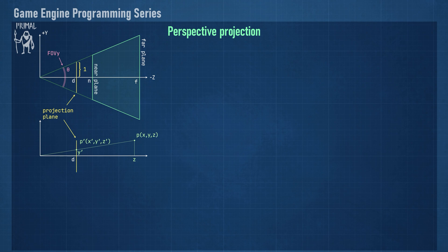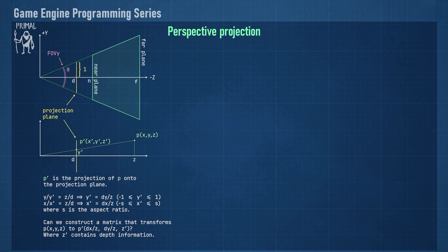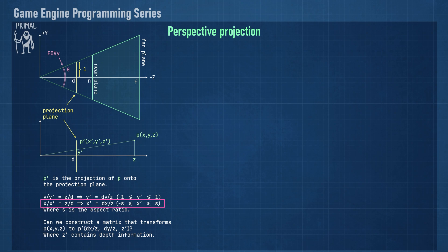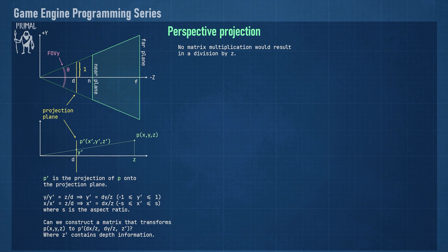Let's start with the X and Y projection. Consider a point P within the camera frustum given by its X, Y, and Z coordinates. The projection of P is a point P' on the two-dimensional projection plane with coordinates X' and Y'. The encoded depth value is put into Z'. Using the similar triangles theorem, we know that the ratio of Z over distance D is the same as the ratio of the point's Y coordinate over Y'. Therefore, Y' equals distance D times Y divided by Z. We can repeat this for the X coordinate. For all points within the frustum, the value of Y' is between minus 1 and 1, whereas the value of X' is between minus S and S, where S is the aspect ratio. It's impossible to have a matrix multiplication that results in a division by the Z component. What we can do is use four-dimensional vectors and back up the Z value in the last component — also known as the W component — effectively postponing the division by Z.